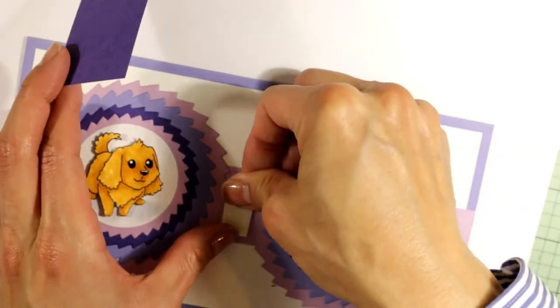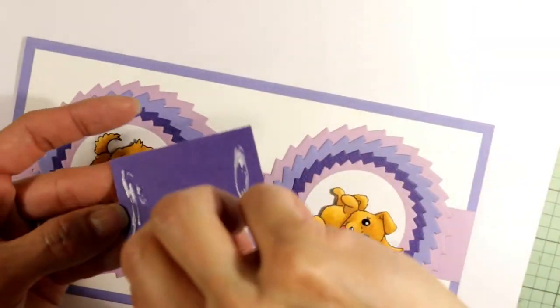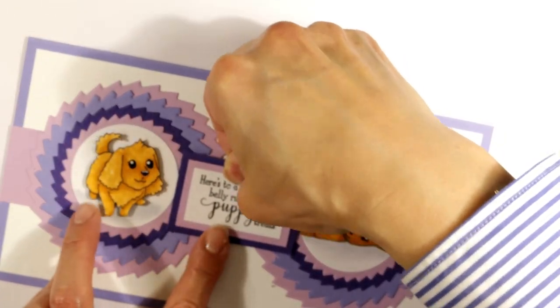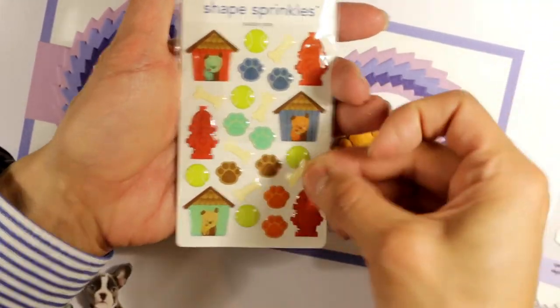For the sentiment, this also came from the same Gina K Designs Playful Pups stamp set. I matted it off camera with the same colored cardstock. It says, 'Here's to a day full of belly rubs and puppy treats.'